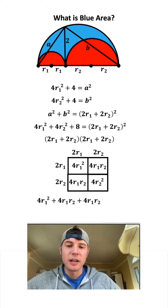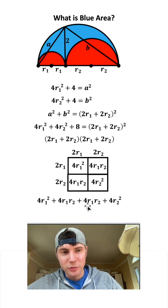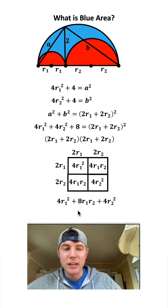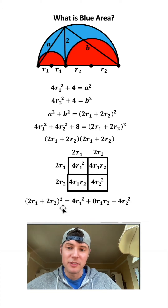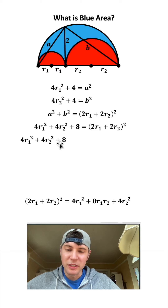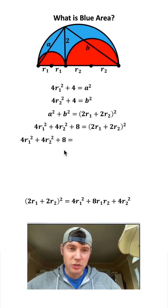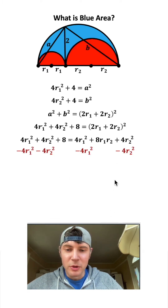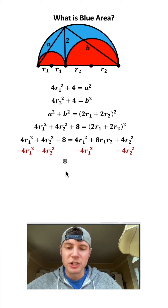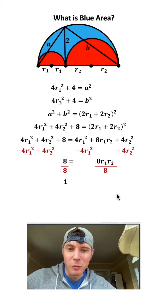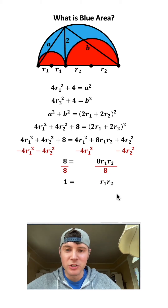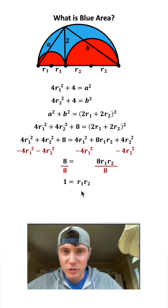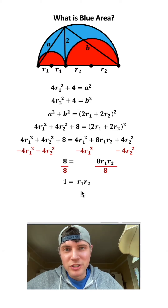We copy down the four terms. We have 4r₁r₂ and another 4r₁r₂, which gives us 8r₁r₂. Now we've squared the parentheses. Bringing everything down and substituting, we subtract the common terms from both sides. On the left we're left with just 8, and on the right we have 8r₁r₂. Dividing both sides by 8 gives us 1 = r₁ × r₂. This is important — let's put a box around it.